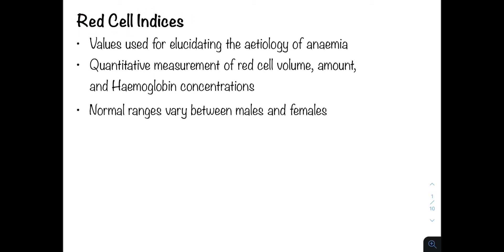Red cell indices are hematological investigations used to elucidate the etiology of anemia. They are quantitative measurements of the red cell volume, amount, and hemoglobin concentrations. We won't be discussing the normal ranges as these are usually given when you're interpreting results and you'll come to appreciate them more as you read and interpret more results. There are also variations between males and females.